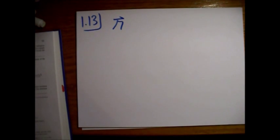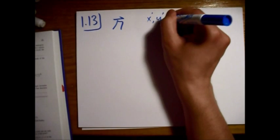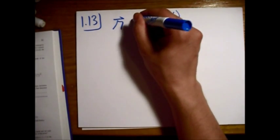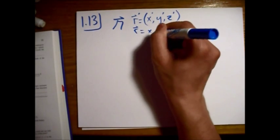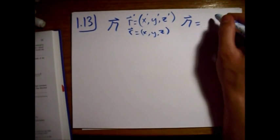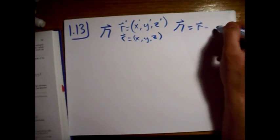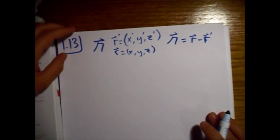Griffiths Z and M, problem 1.13. We have this cursive R vector, which is a separation vector from a fixed source point at x-prime, y-prime, z-prime, to the field point at x, y, z. This cursive R is equal to the field point minus the source point — the position vector for the source point.